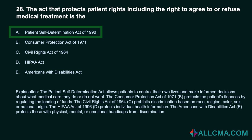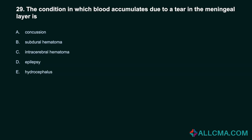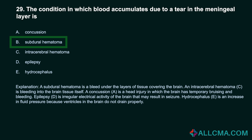Question 29: The condition in which blood accumulates due to a tear in the meningeal layer is: A. Concussion. B. Subdural hematoma. C. Intracerebral hematoma. D. Epilepsy. E. Hydrocephalus. Correct answer: B. Subdural hematoma. A subdural hematoma is a bleed under the layers of tissue covering the brain. An intracerebral hematoma is bleeding into the brain tissue itself. A concussion is a head injury in which the brain has temporary bruising and bleeding. Epilepsy is irregular electrical activity of the brain that may result in seizure. Hydrocephalus is an increase in fluid pressure because ventricles in the brain do not drain properly.